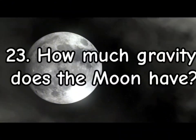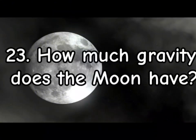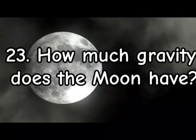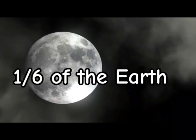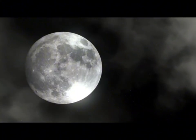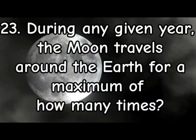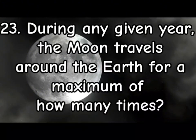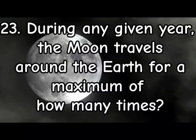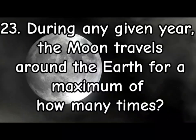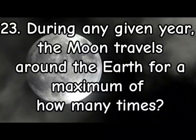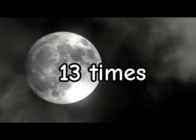23. How much gravity does the Moon have? A sixth of the Earth's gravity. 23. During any given year, the Moon travels around the Earth for a maximum of how many times? 13 times.